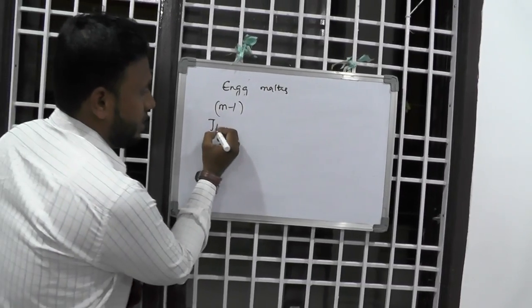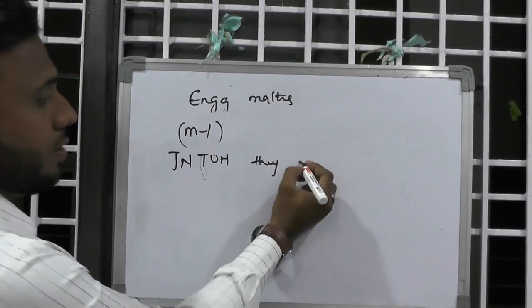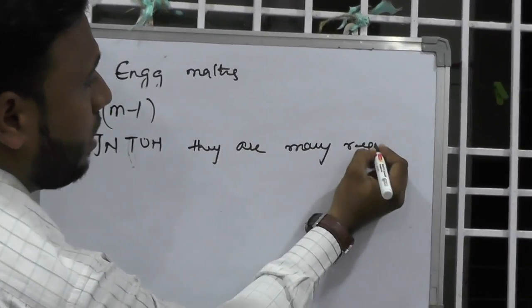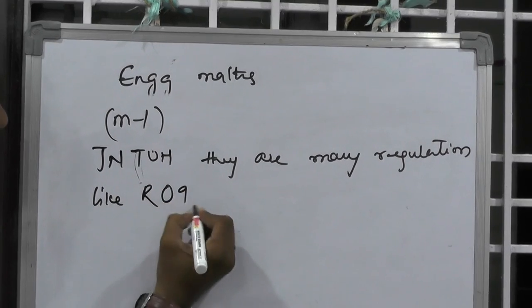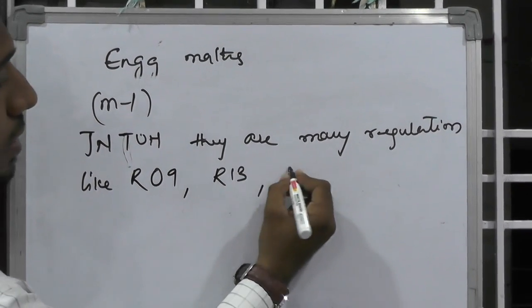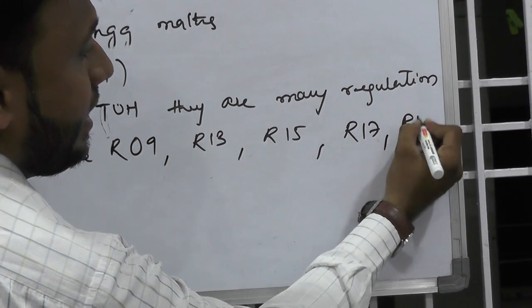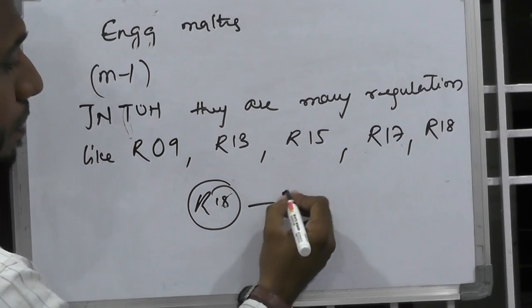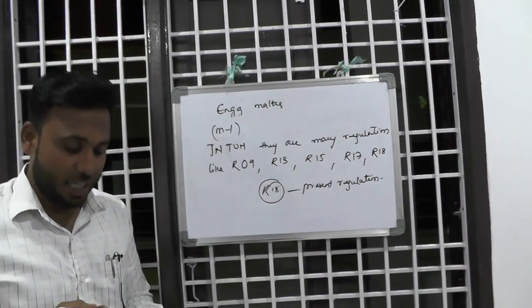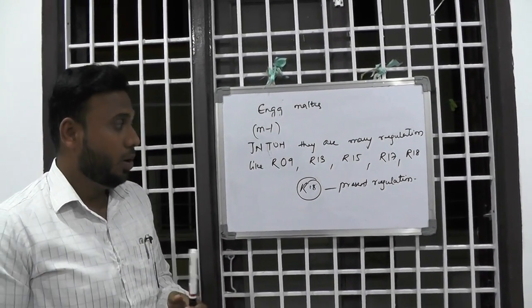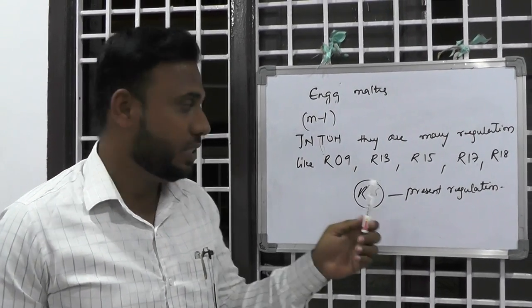In JNTUH, there are many regulations like R09, R13, R15, R17, and R18. R18 is the present regulation in JNTUH.